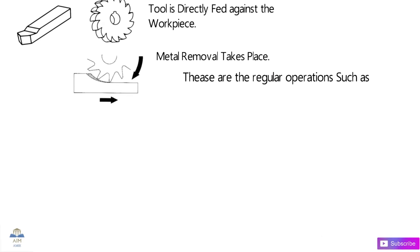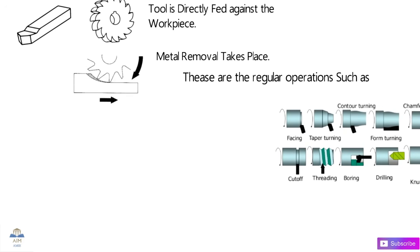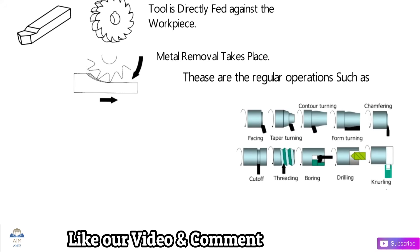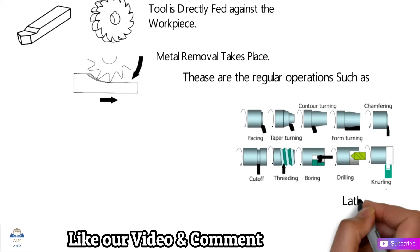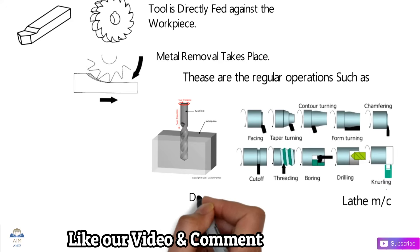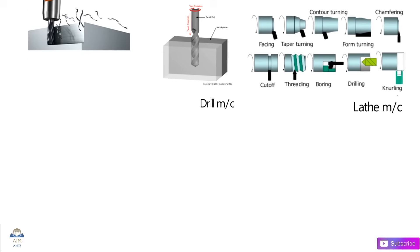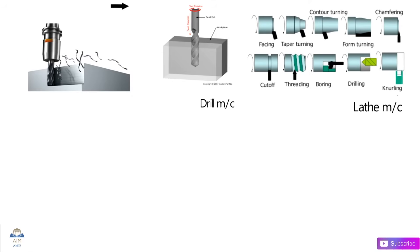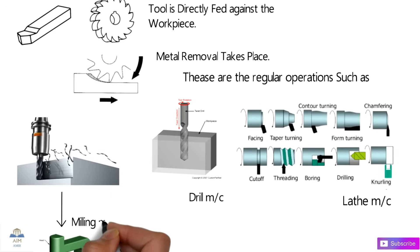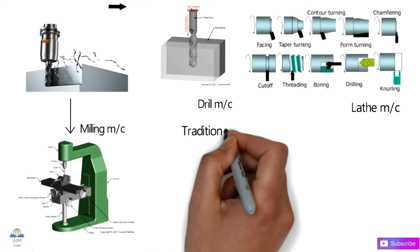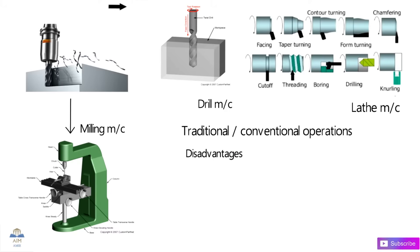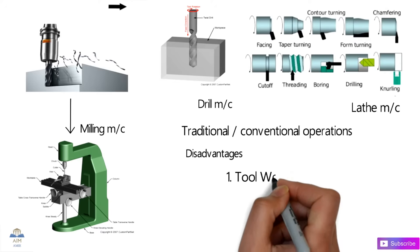Some major traditional machining processes include facing, taper turning, counter turning, form turning, chamfering, knurling, drilling, boring, threading, and parting off. All these operations are carried out on a lathe machine. For vertical drilling, a drill machine is required, and for milling operations such as form milling and side milling, a vertical milling machine is used.